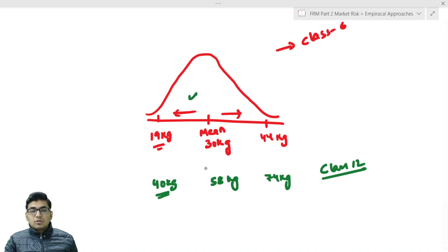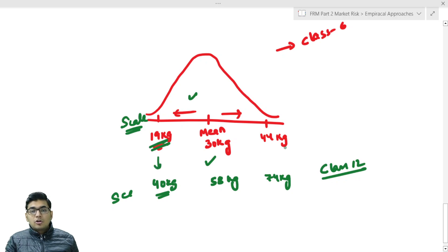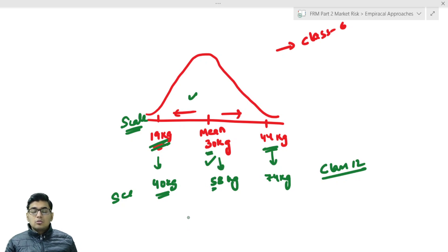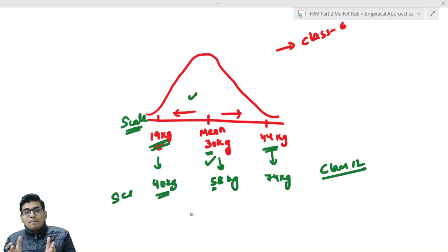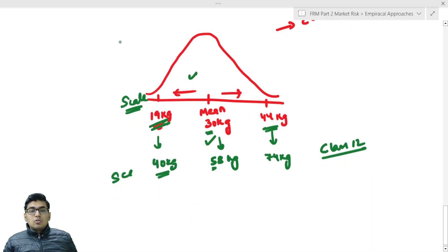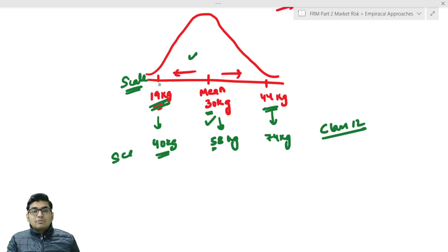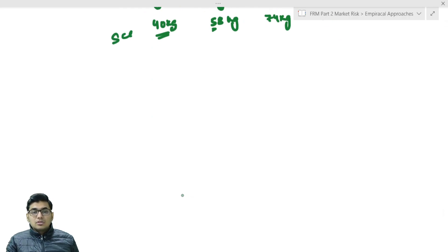If you want to compare these two curves, you cannot directly compare them because their scales are different — class 6 has values like 19, 30, 44 and class 12 has 40, 58, 74. So if we want to compare class 6 and class 12, we need to scale them and bring them to the same parity. We need to standardize these values.